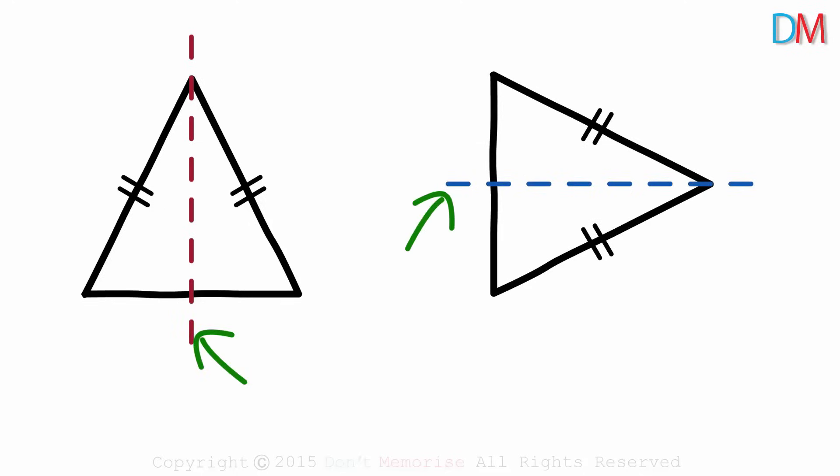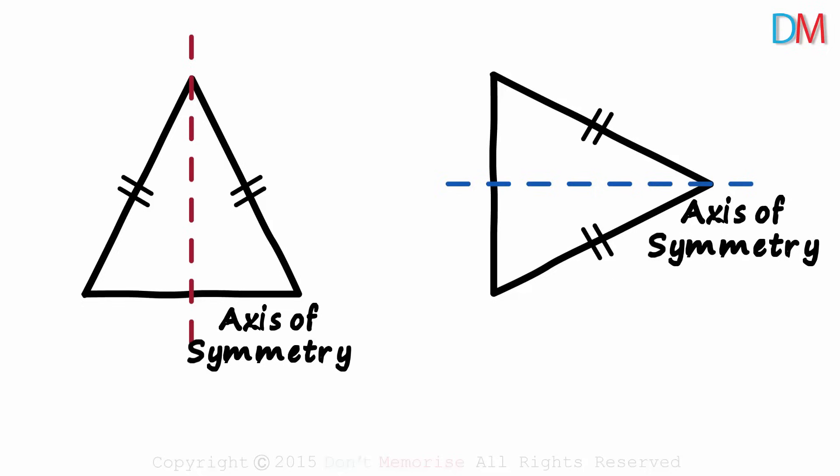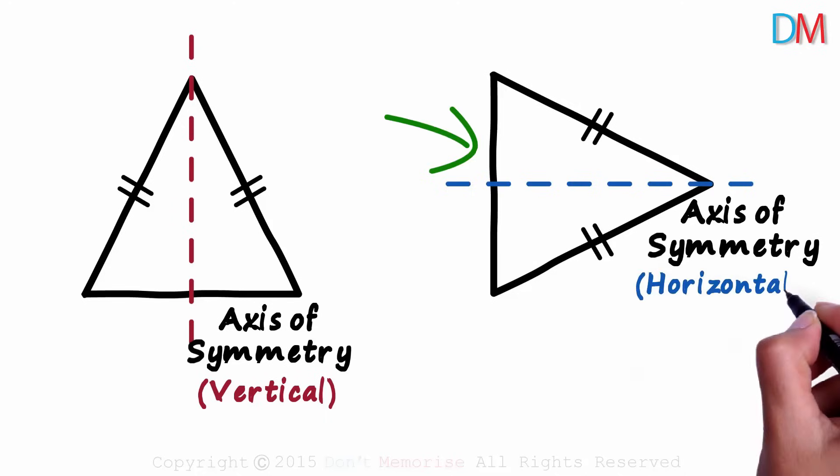Both these lines we see here are called the lines of symmetry or the axis of symmetry. This triangle has a vertical axis of symmetry as this line is vertical. And this one has a horizontal axis of symmetry as this line is horizontal.